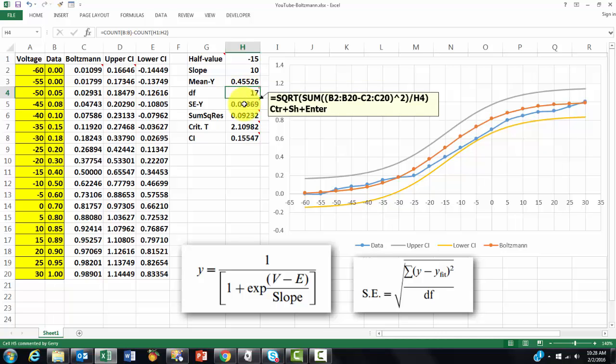Then we calculate the standard error for y. Here is the formula for us. We take the observed y values minus the y-fit values. Those are the Boltzmann values. Divided by the degrees of freedom and take the square root of it. That's what we did here.